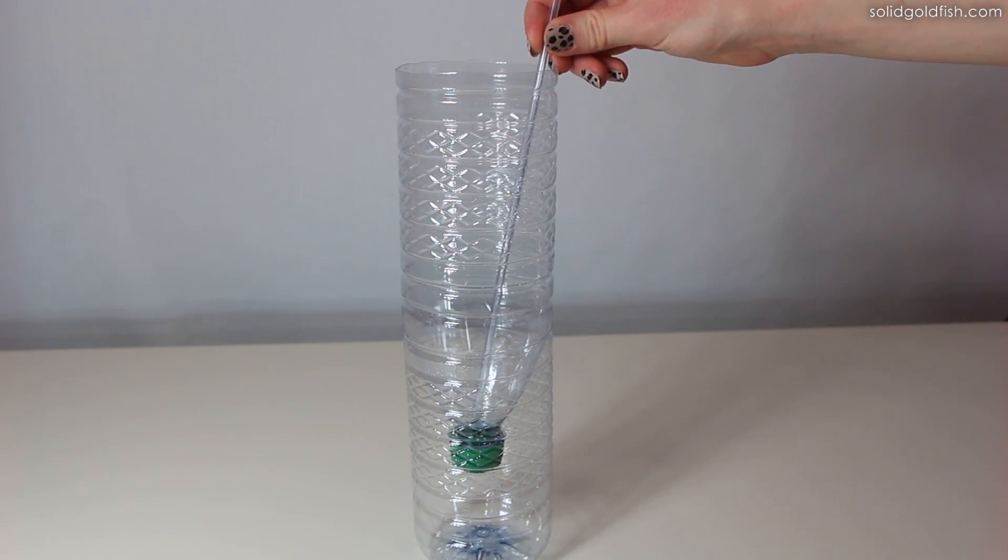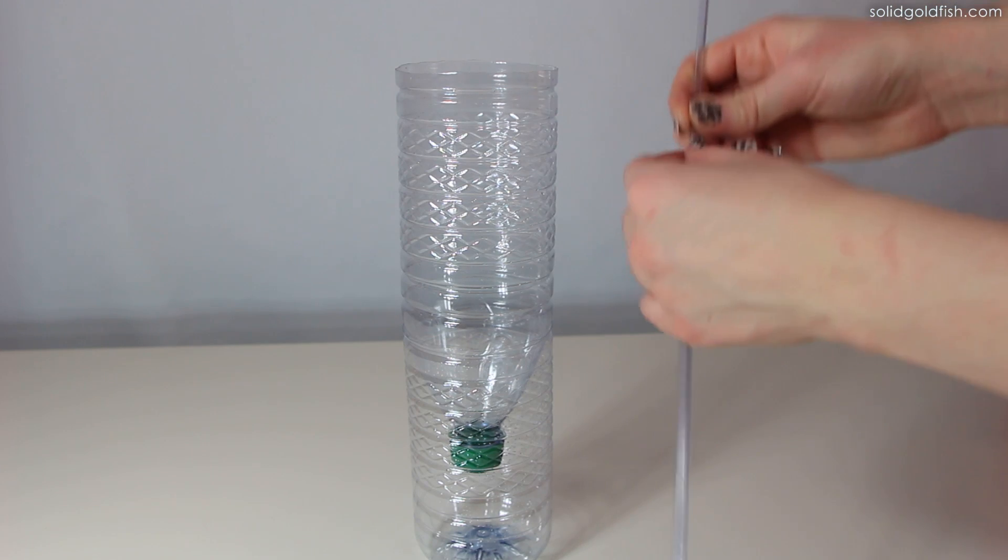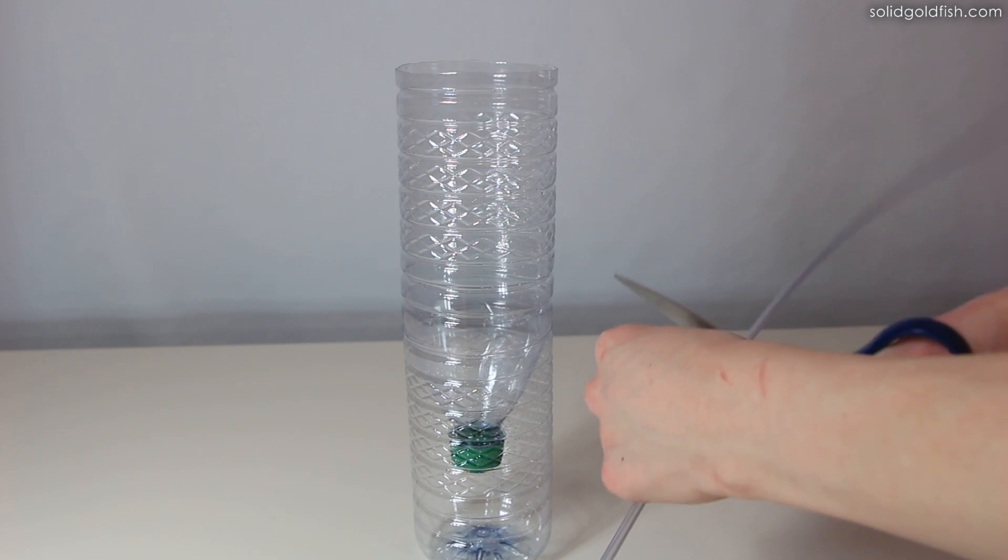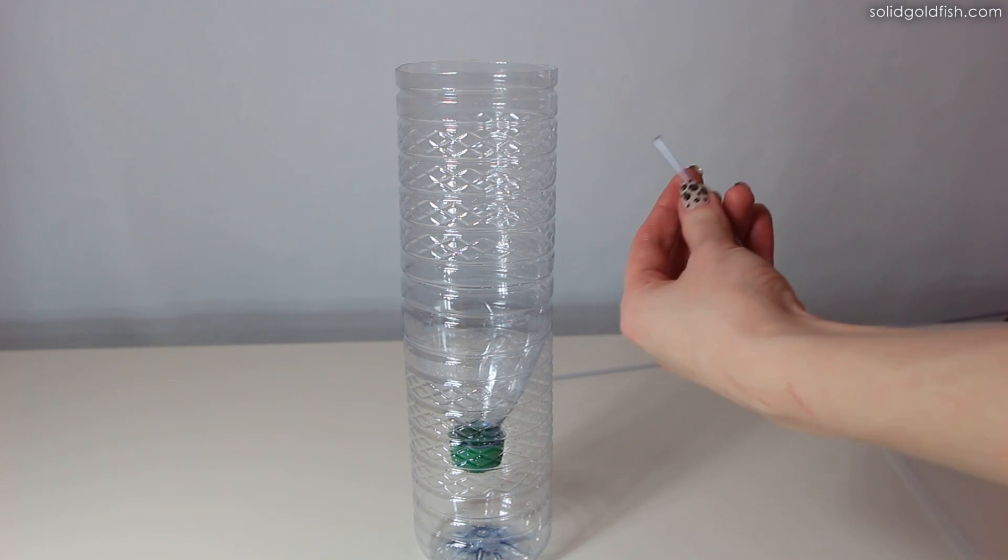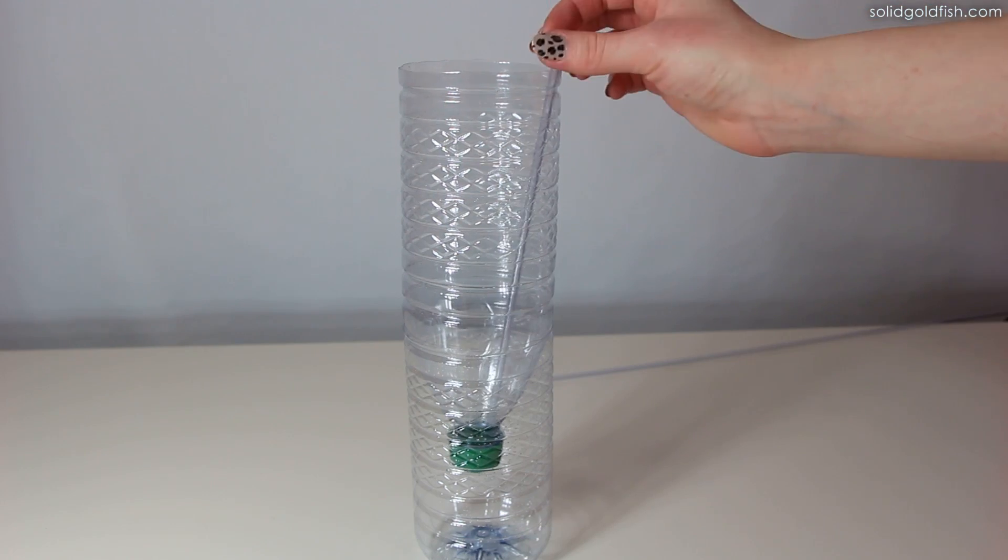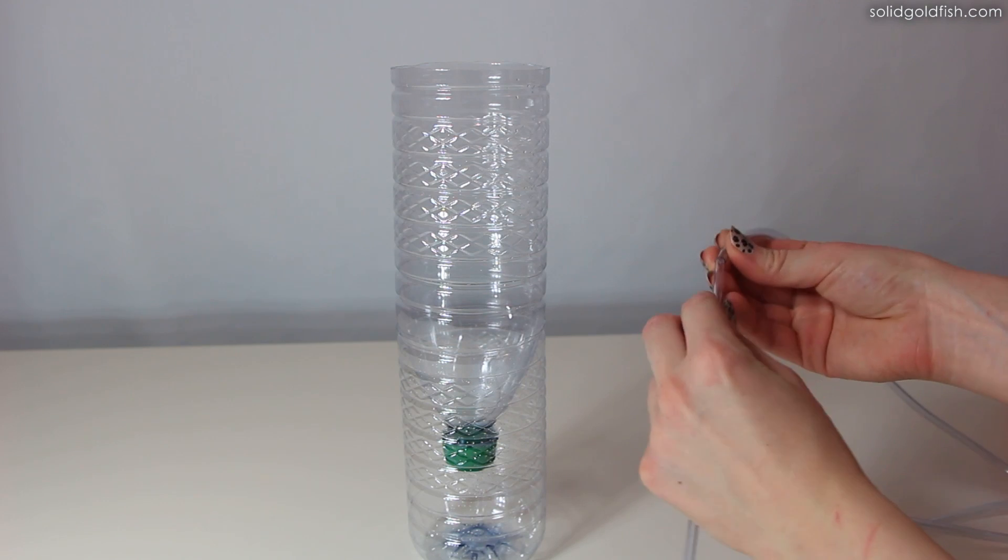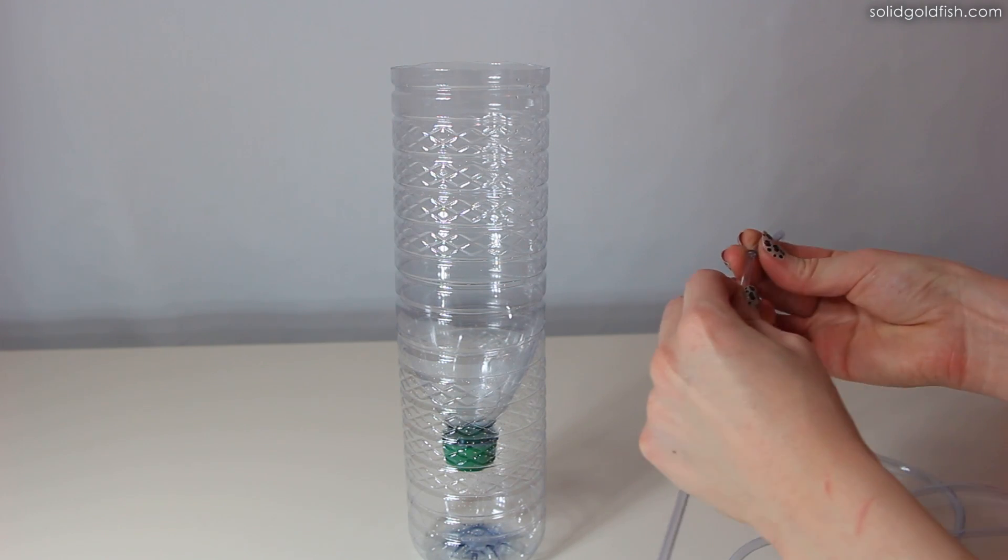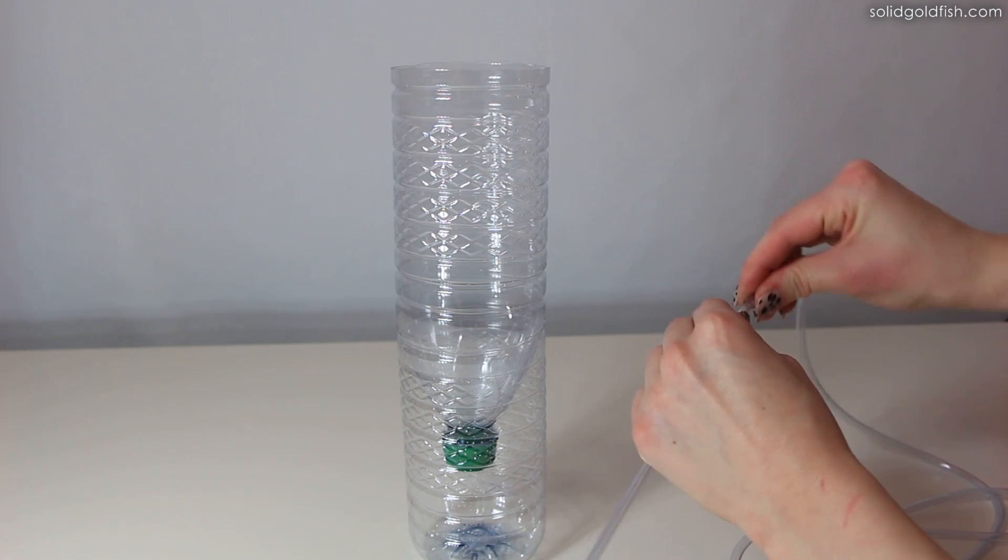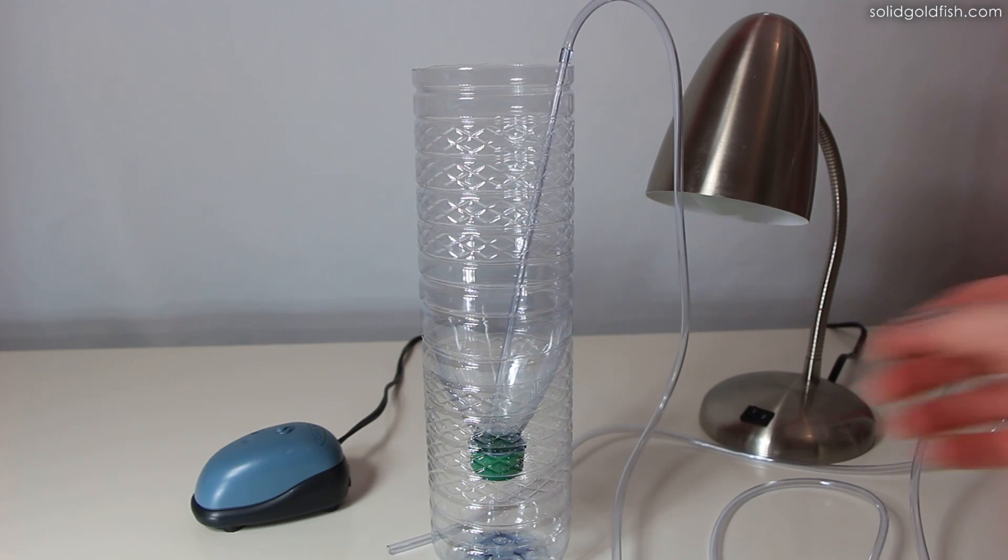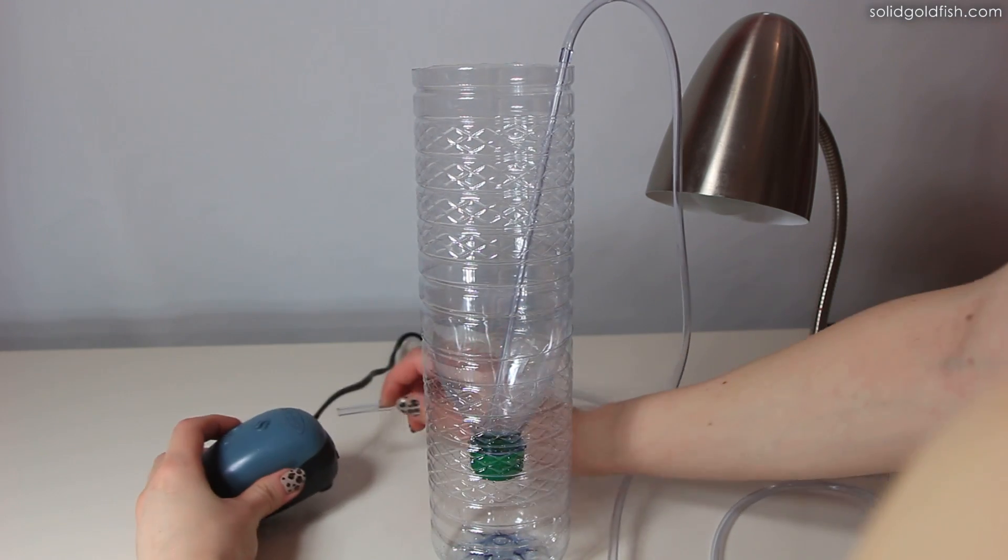Cut a length of rigid airline tubing to roughly the same height as the reservoir bottle. Attach a length of flexible airline tubing to it. Attach the other end of flexible airline tubing to your air pump. The rigid airline tubing should be placed into the reservoir.